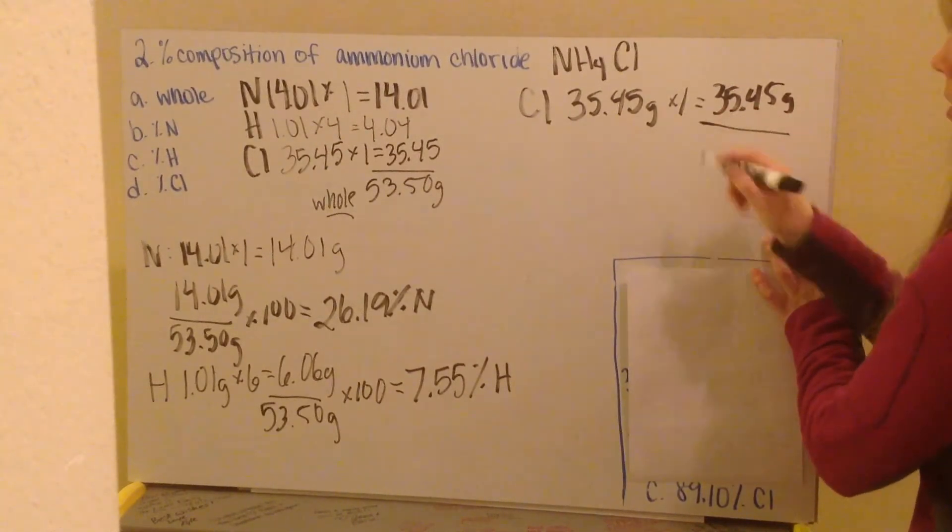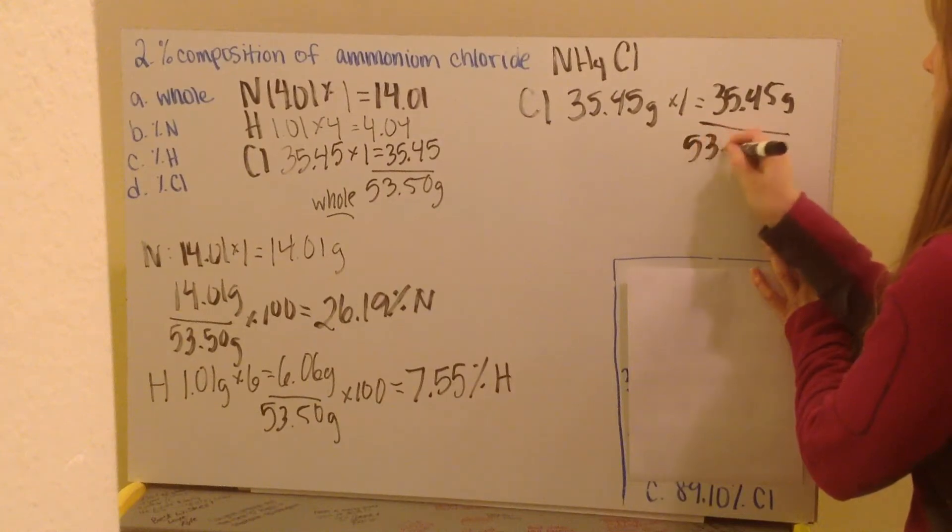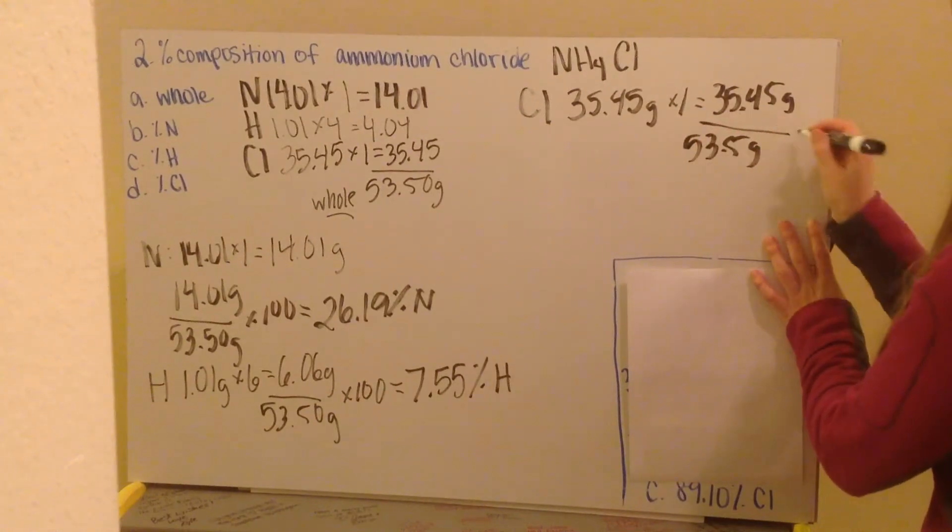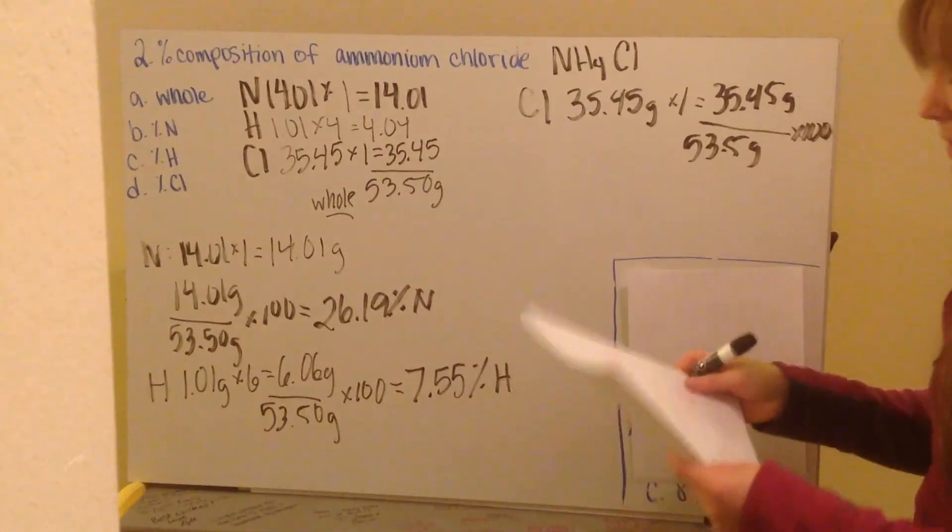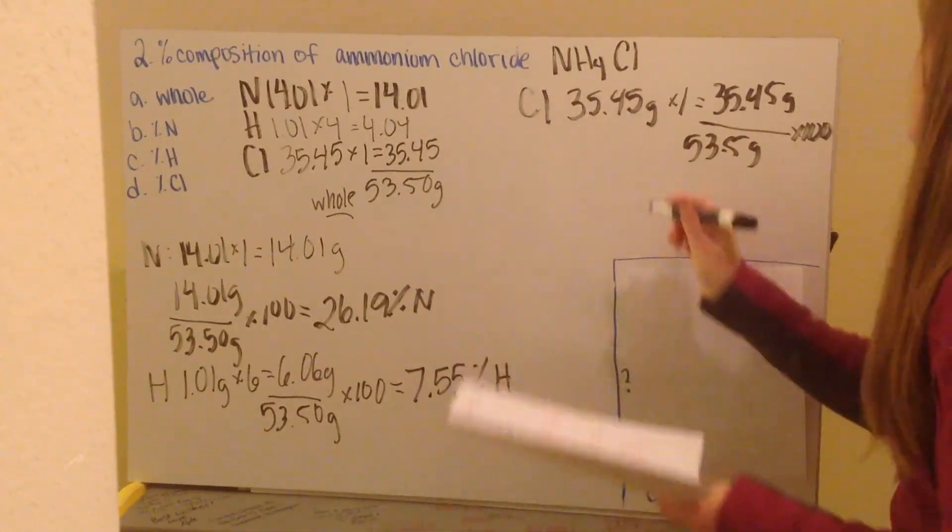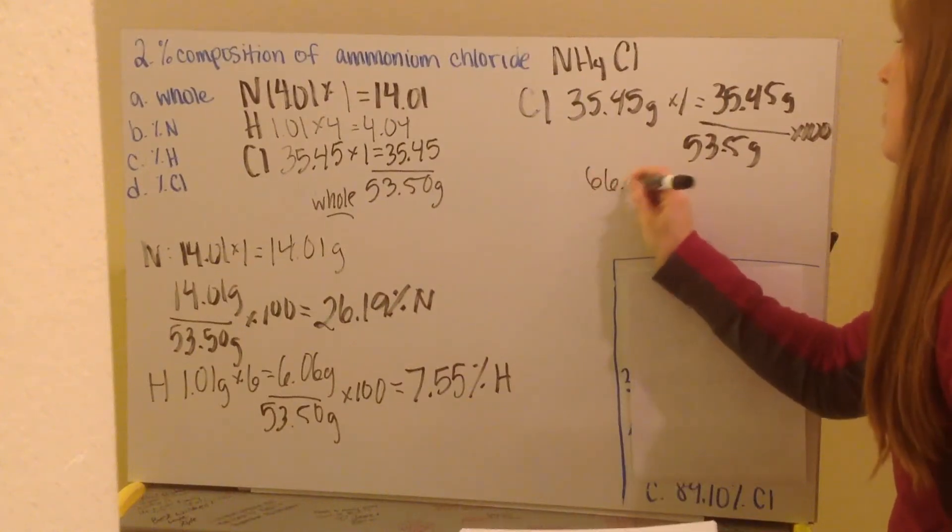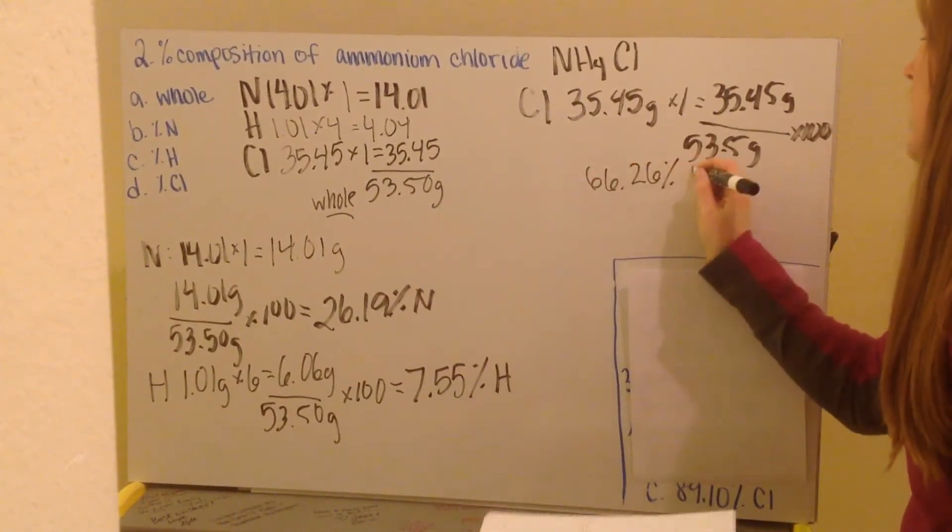Multiplied by 100, I get a mass percent, or a percent composition, of 66.26% chlorine.